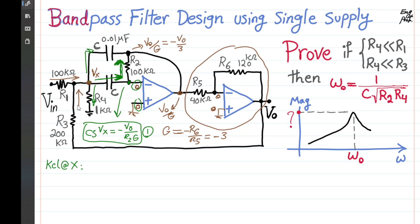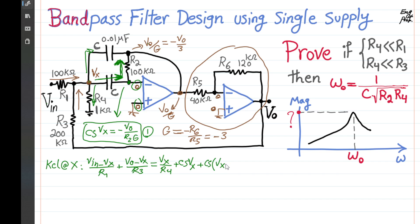Now writing the full KCL at node X: (V_in − Vx)/R1 + (V_out − Vx)/R3 equals Vx/R4 + Cs·Vx + Cs·(Vx − V_out/G). This is equation 2. Substituting Vx from equation 1 into equation 2 eliminates Vx and yields a single equation relating V_in and V_out.